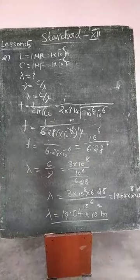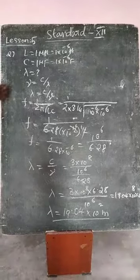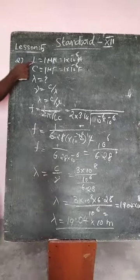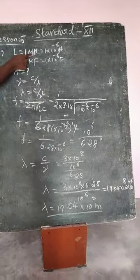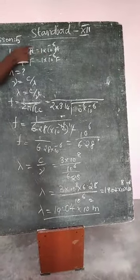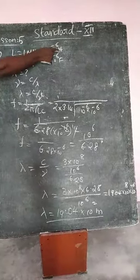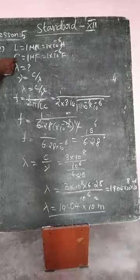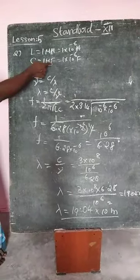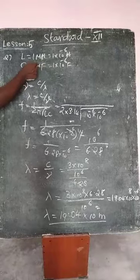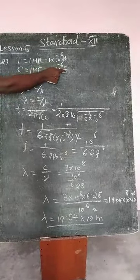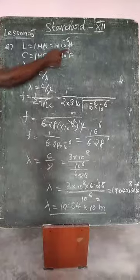From the given data, inductance L is equal to 1 microhenry, equal to 1 into 10 power minus 6 Henry. Capacitance C equal to 1 microfarad, 1 into 10 power minus 6 farad.